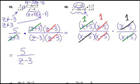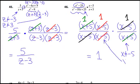In this problem, everything reduced — they were all the same thing over the same thing. So my answer is 1. Remember, this denominator was x plus 5, so the restriction on the domain is negative 5. And this x minus 5 gives a restriction of positive 5.